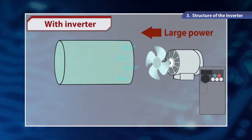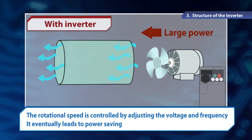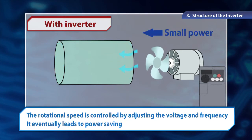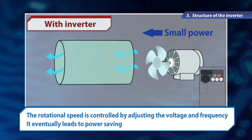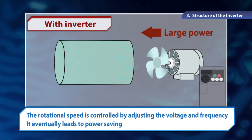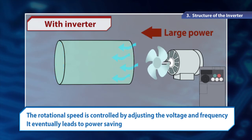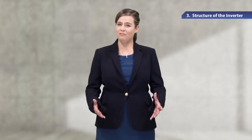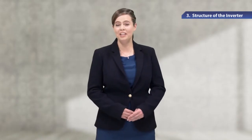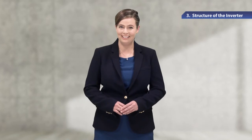With an inverter, the fan rotation can be adjusted to supply the necessary amount of air. It allows us to save on power consumption by adjusting the voltage and frequency and rotate the motors efficiently. The inverter has the advantage of being convenient as well as energy-saving.